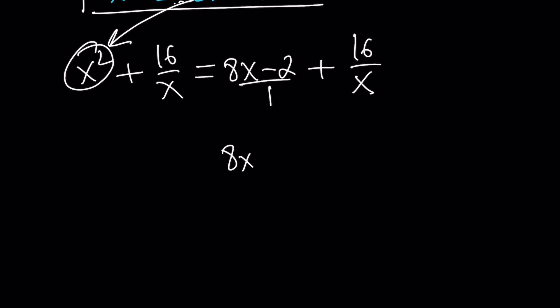Multiply 8x minus 2 by x because this is 1, and then you're going to get 8x squared minus 2x plus 16 over x. Where does this come from? Again, from the expression that we're trying to evaluate. Make sense? So far, so good?